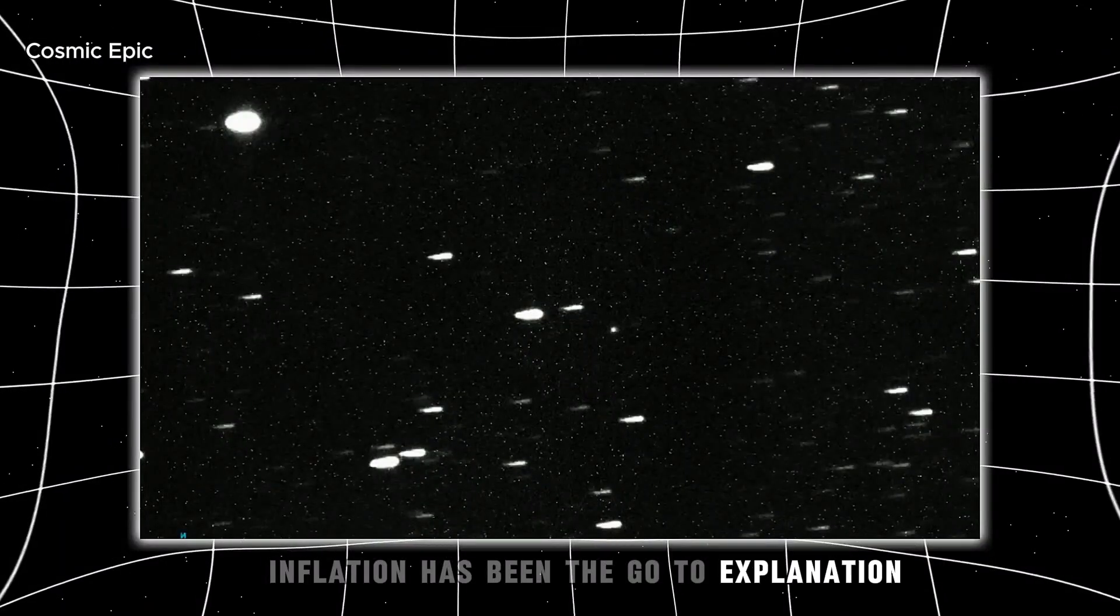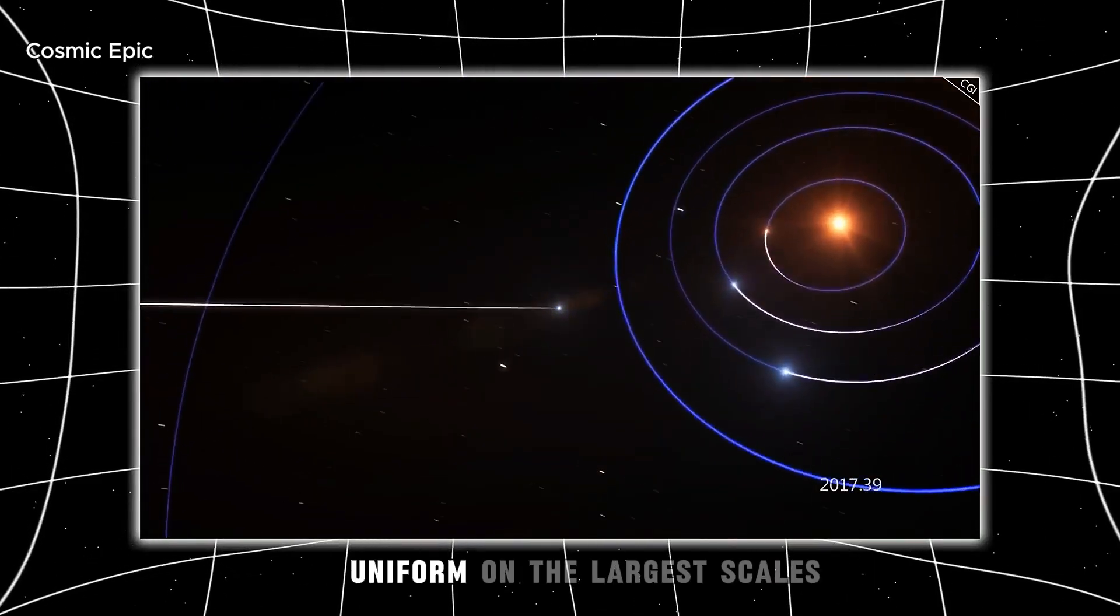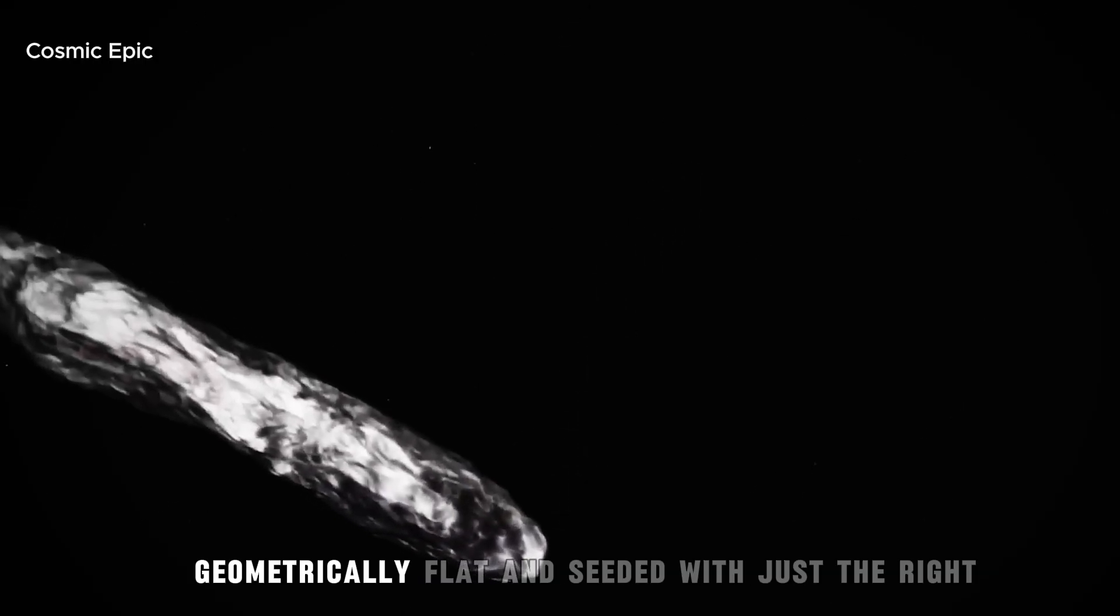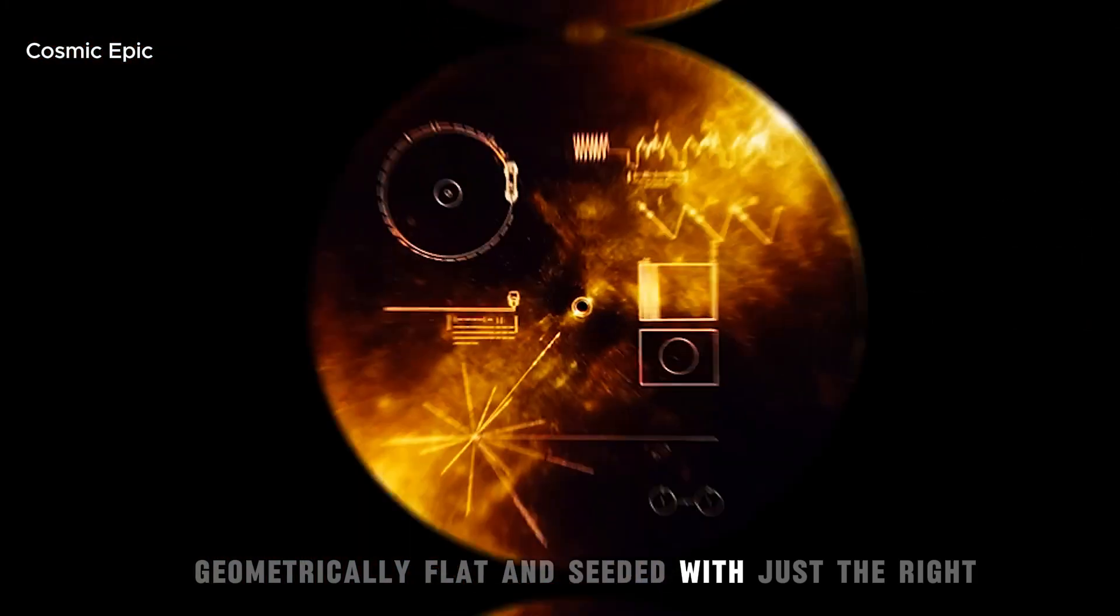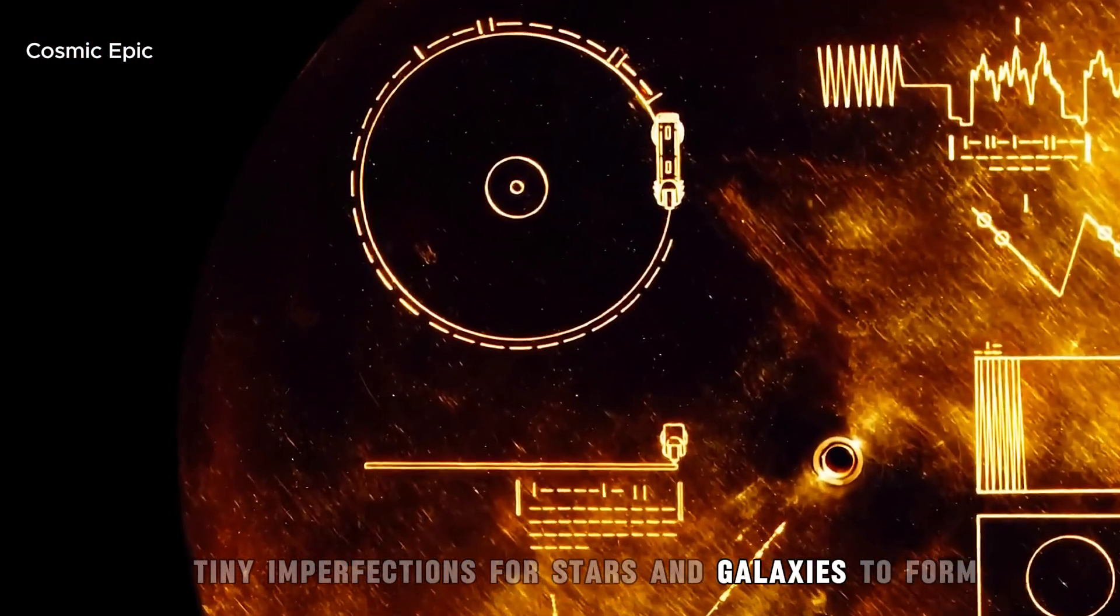Inflation has been the go-to explanation for why the cosmos looks the way it does: uniform on the largest scales, geometrically flat, and seeded with just the right tiny imperfections for stars and galaxies to form.